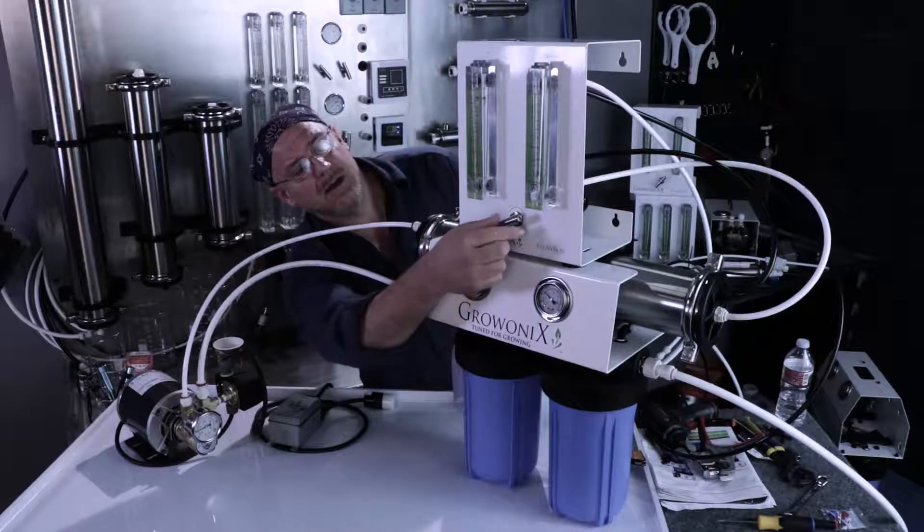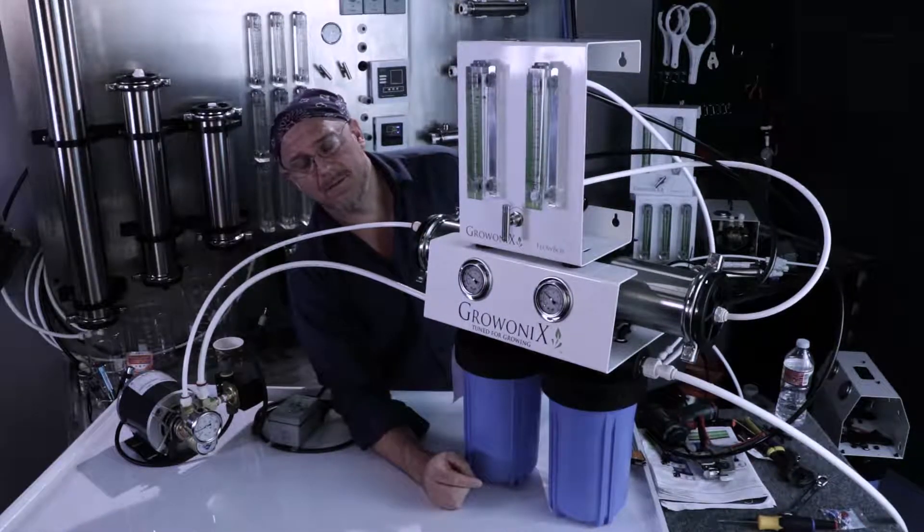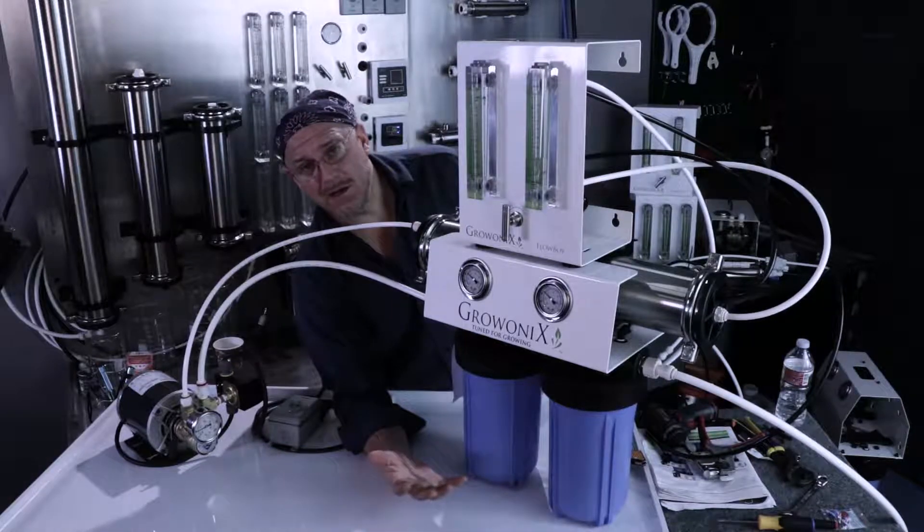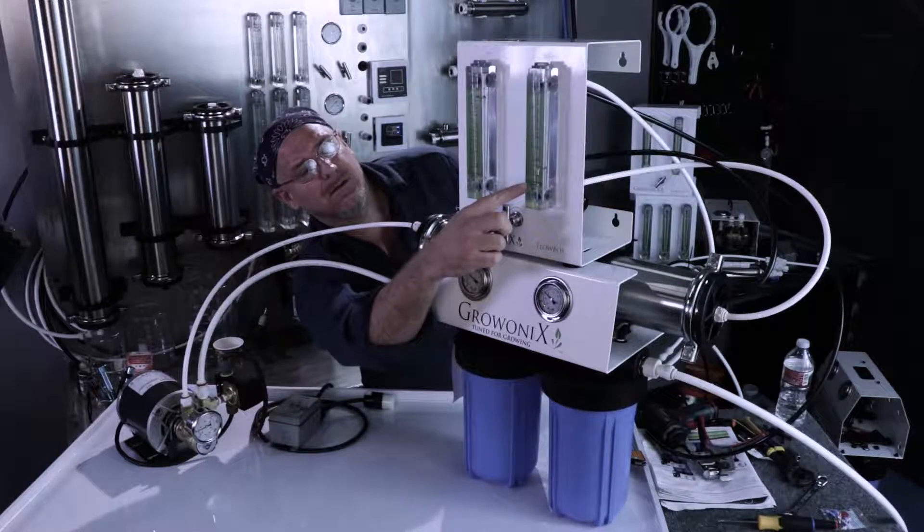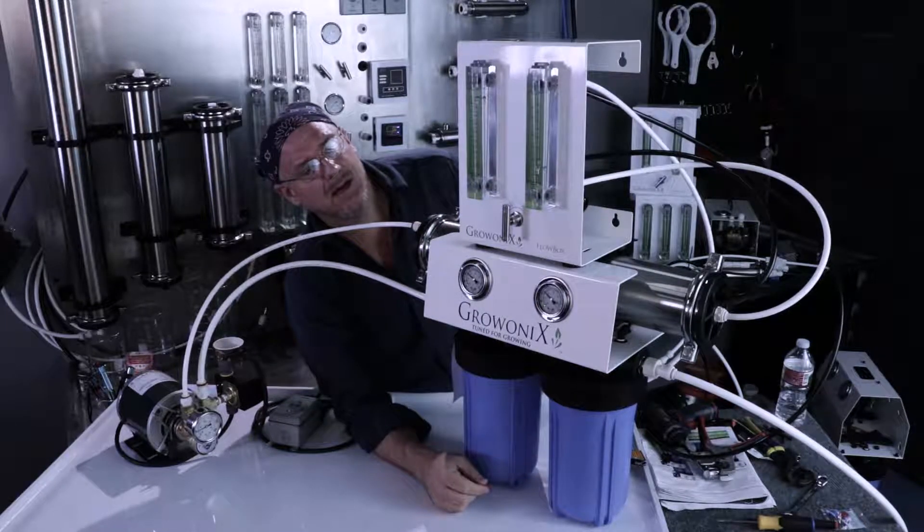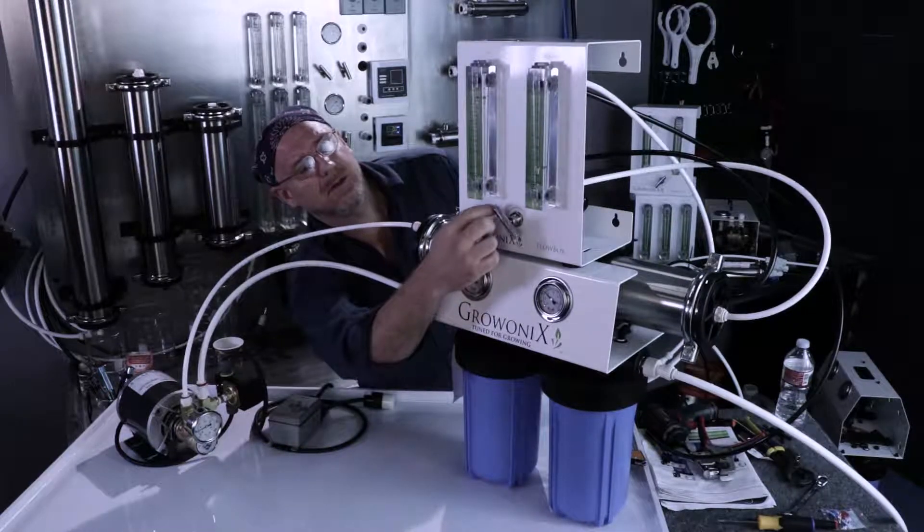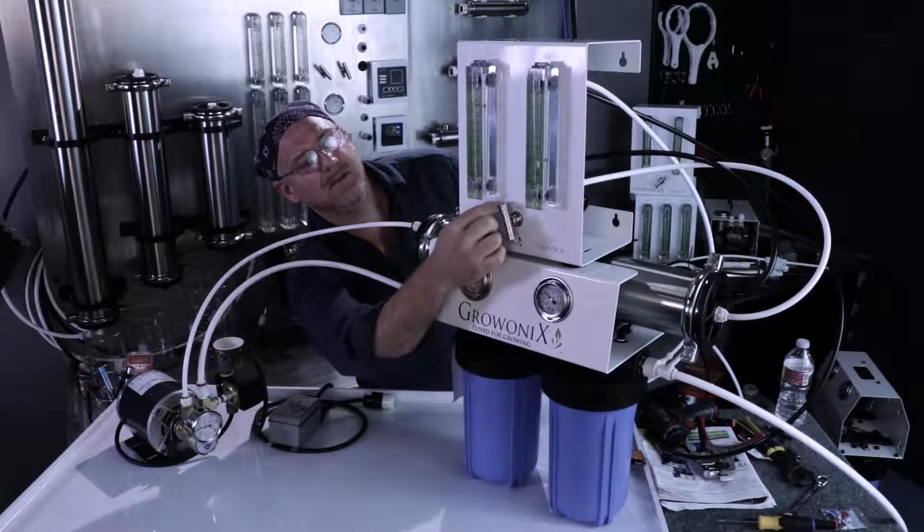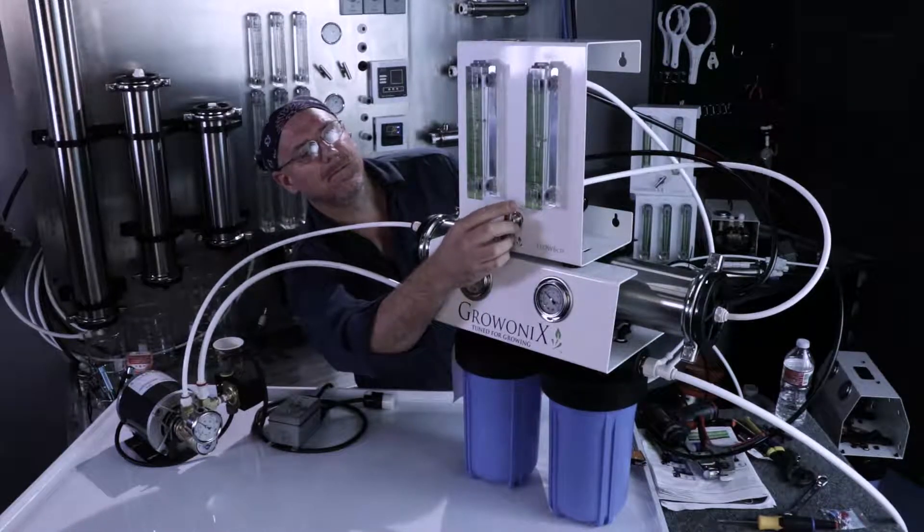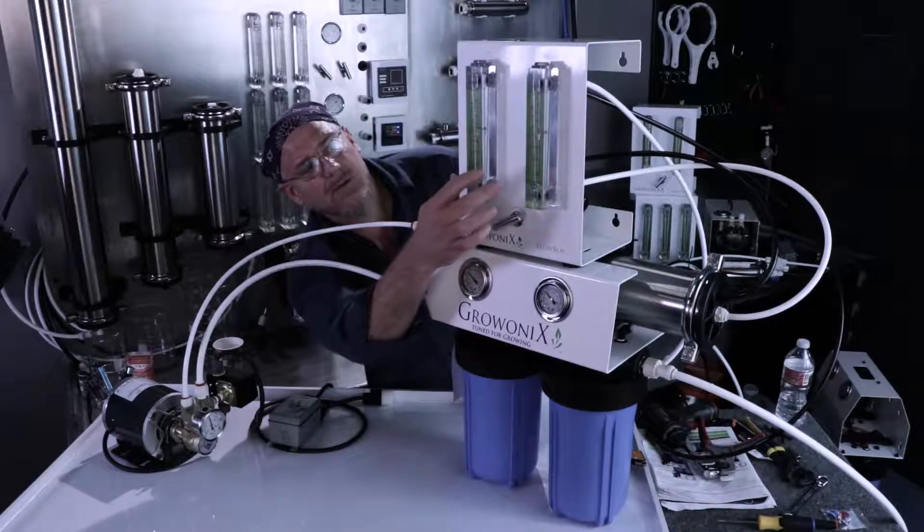Notice I opened the drain valve up and the drain flow meter is almost pegged. This RO is in flush mode. You can see the bubbles coming up to the permeate side. Now we're going to start closing off the drain flow meter and make these flow meters even, bringing it down to one-to-one.